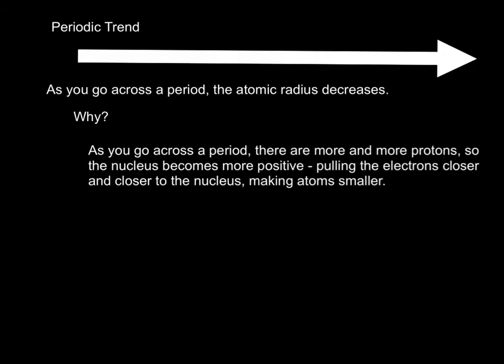Now the periodic trend, so that means as I go across a period from left to right, just like you're reading a book in English, the atomic radius actually decreases. And that's not intuitive. You might have guessed that it would get bigger because you're adding electrons and protons. But what happens,